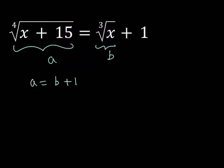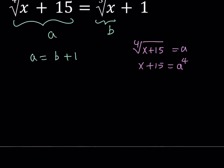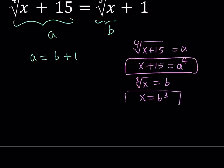What do we get? Well, the first one gives us the fourth root of X plus 15 is equal to A. So if I raise both sides to the fourth power, then I should be getting something like X plus 15 equals A to the fourth power. Great. Now what else can I do? Well, the second one gives me cube root of X equals B. And if I cube both sides, I get X equals B cubed.